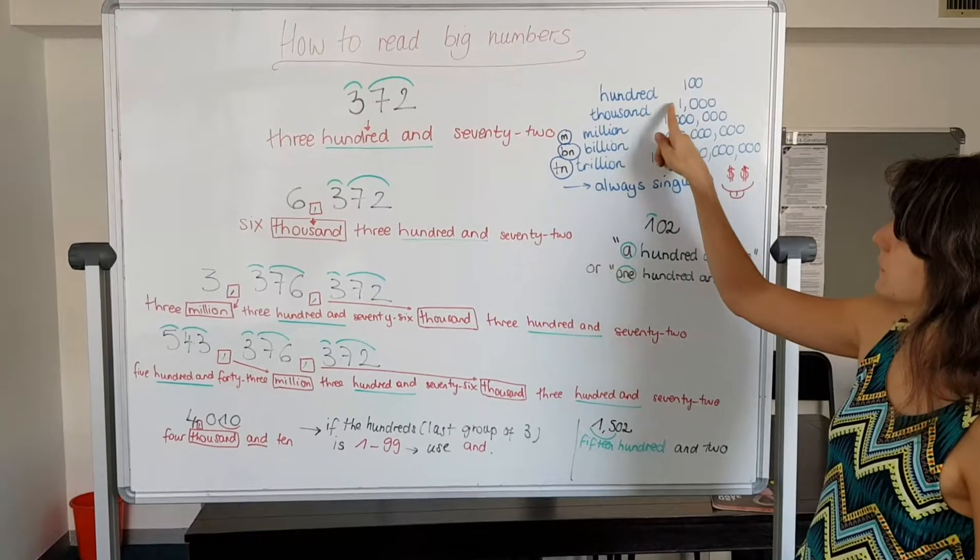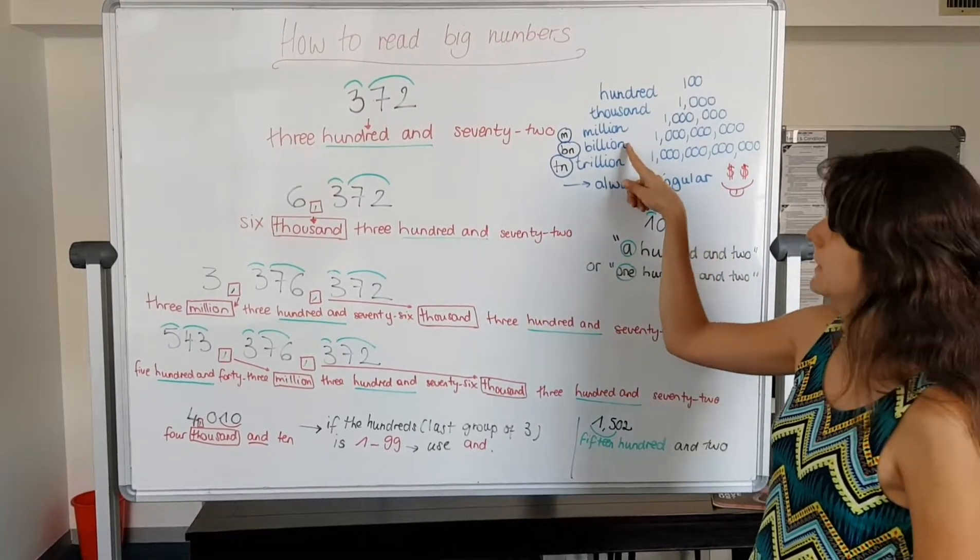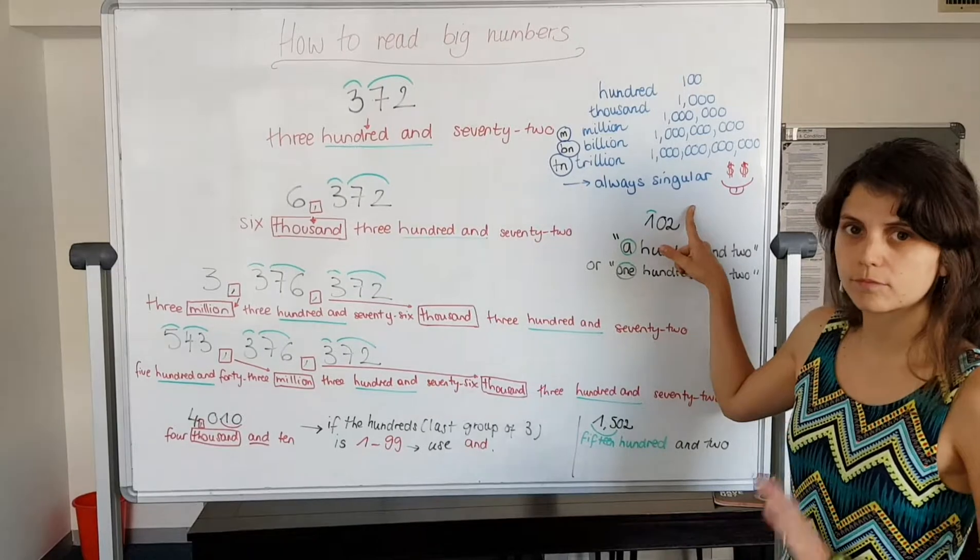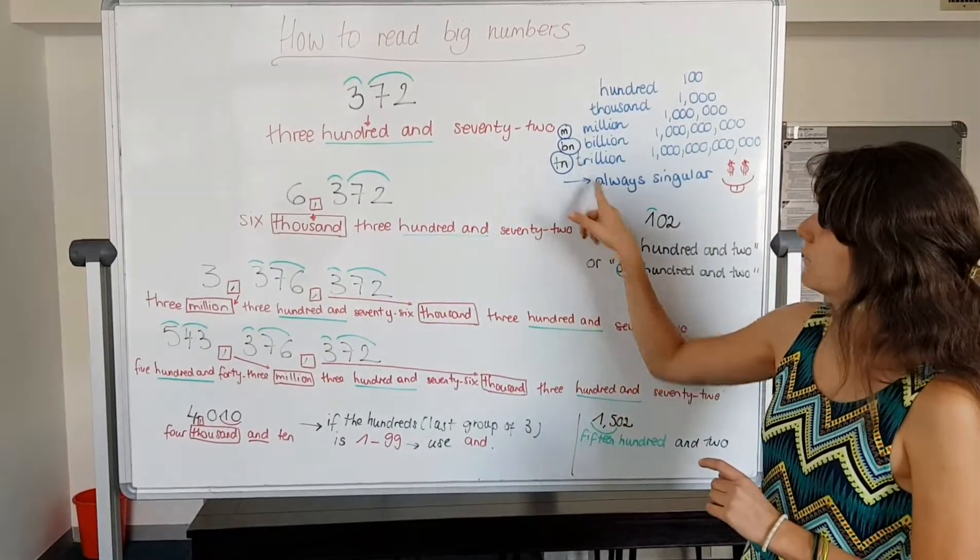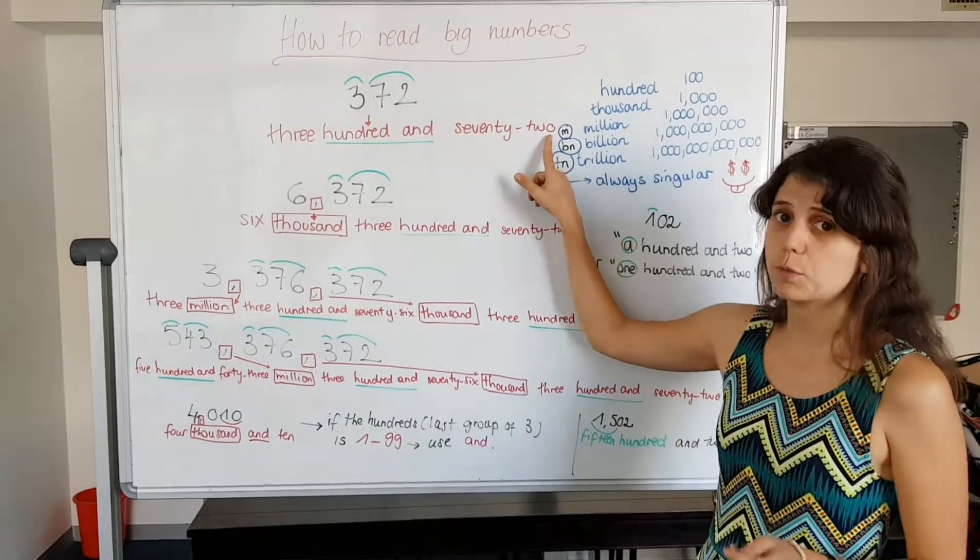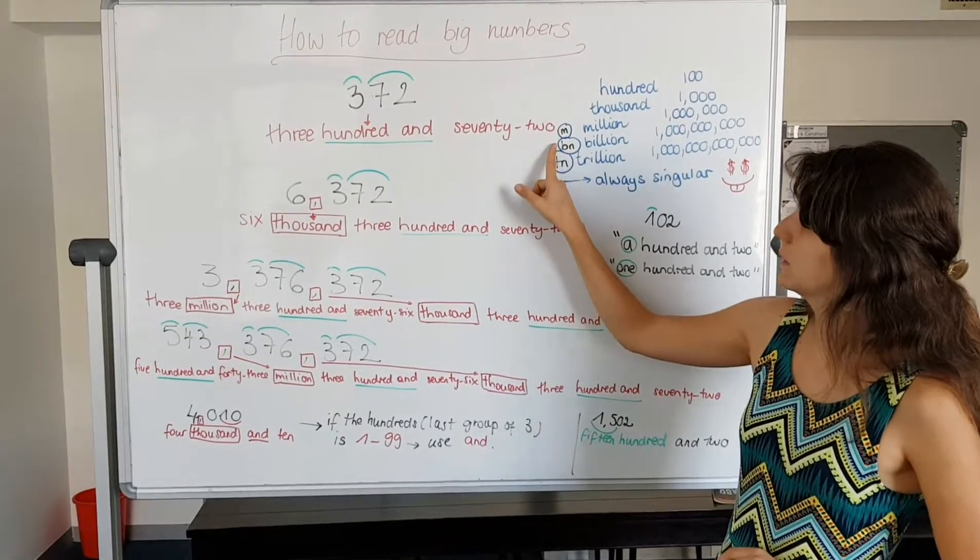Right, so hundred, thousand, million, billion, and trillion are always singular. We don't put 's' when you read the number like this. It's always singular. And this is what you might see in newspapers: M is million, BN is billion, TN is trillion.